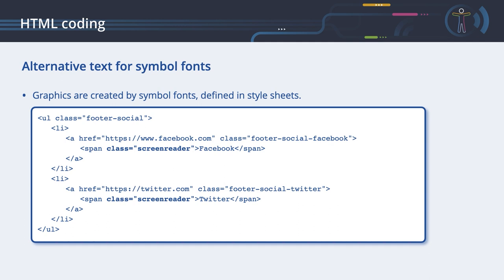Alternative text for symbol fonts. Sometimes graphics on web pages are not created by image files — they are created by symbol fonts defined in stylesheets. As they are graphics, they need alternative texts so that they can be recognized by users with visual disabilities. There are multiple ways to achieve this. Our first example is a menu presenting a social media menu. Each menu item is created with a class referring to a stylesheet entry defining the font graphic. As this is just a hyperlink created with an A tag, we cannot use an alt attribute here. Therefore, we create a span element inside the hyperlink using the class 'screen reader', to mark elements as invisible to sighted users but readable by screen readers only.